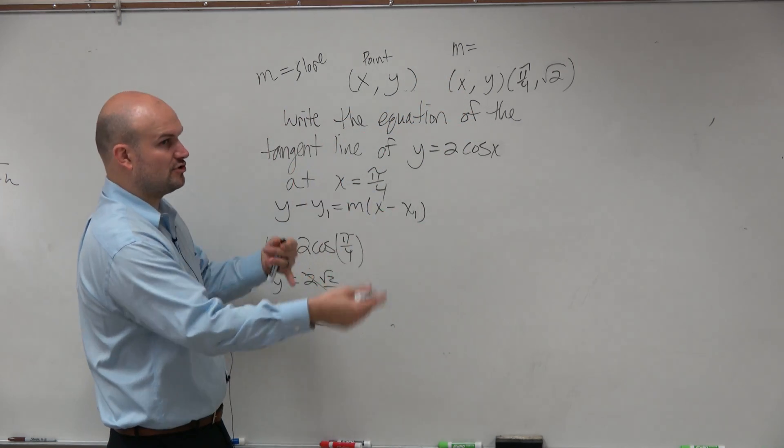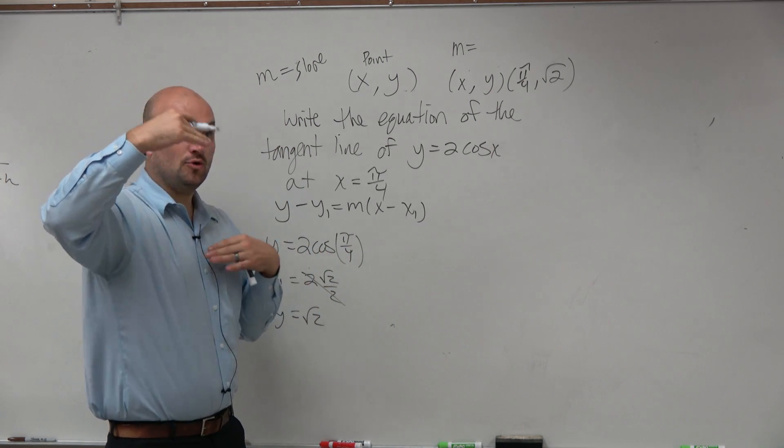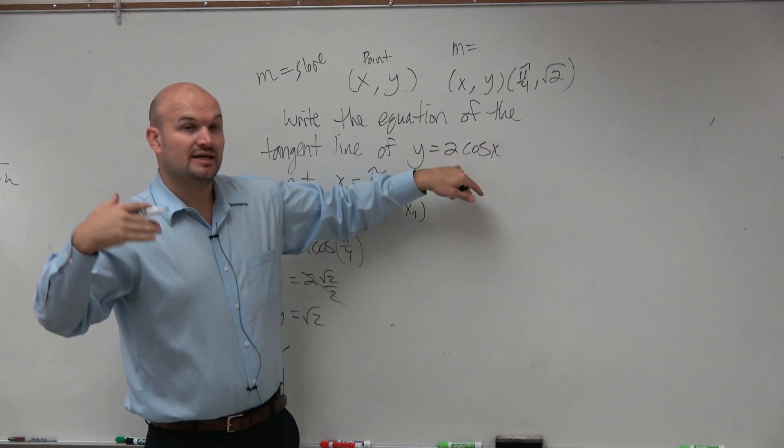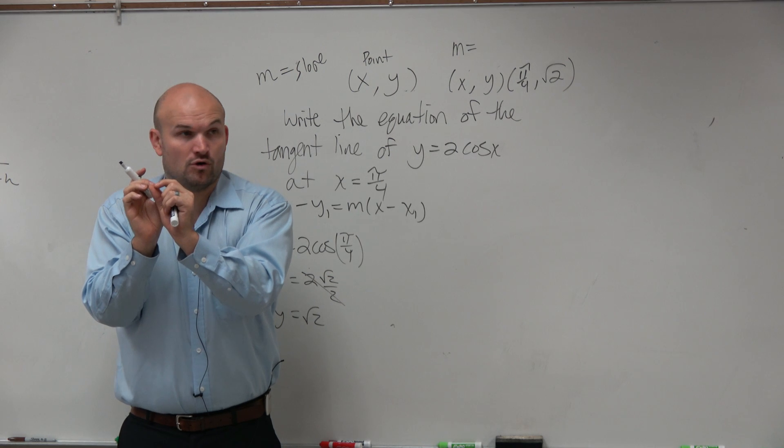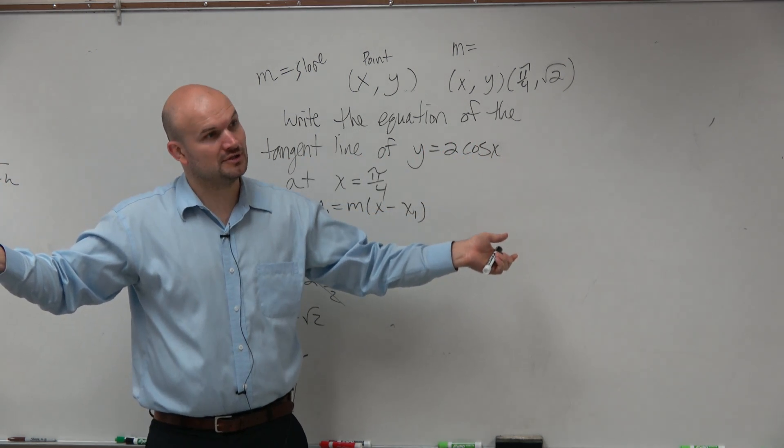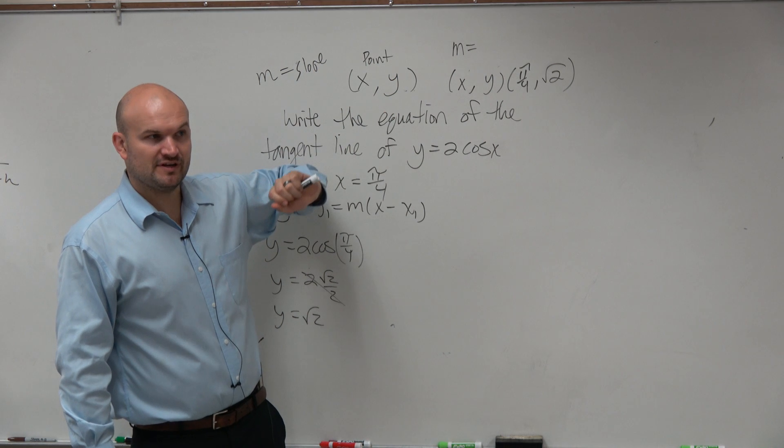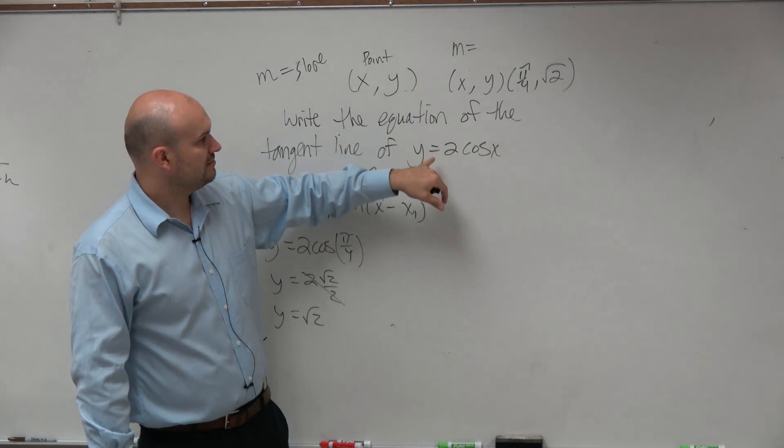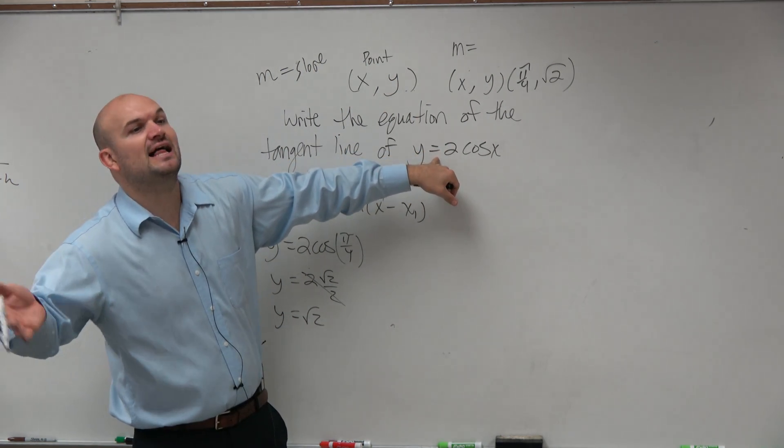Well remember, if we have some crazy curve, the slope at any given point is going to be that local linearity or that tangent line. So how do we find that tangent line, local linearity? We take the derivative of the function. So we take the derivative of the function and then evaluate it at that point.